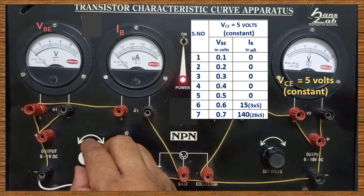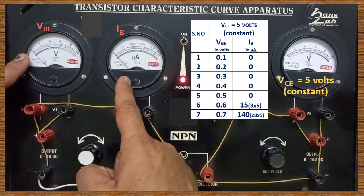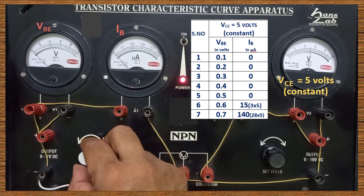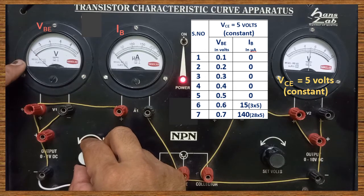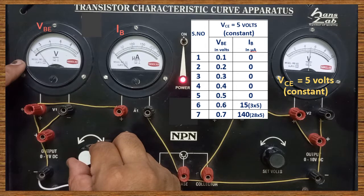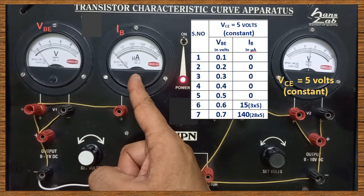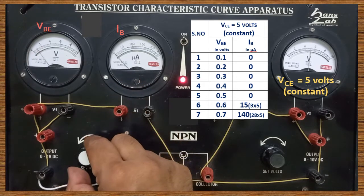Now I am going to vary the value of VBE. Currently VBE value is 0, and IB value is also 0. Make a note in your tabular column. Now I am going to increase the value of VBE from 0 volt to 0.1 volt. VBE value is 0.1 volt. Note down the reading in IB — it shows 0.